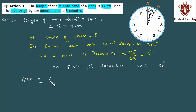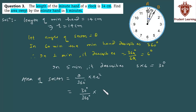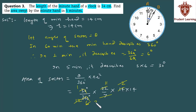We know that area of sector = (theta / 360°) × π r². Value substitute karte hain: theta = 30°, pi = 22/7, r = 14 cm. So area = (30/360) × (22/7) × 14 × 14. Zeros cancel karo, 3 into 1 is 3, simplifying further: 14 into 11 = 154, denominator mein sirf 3 bachega. Finally, area of sector = 154/3 centimeter square.